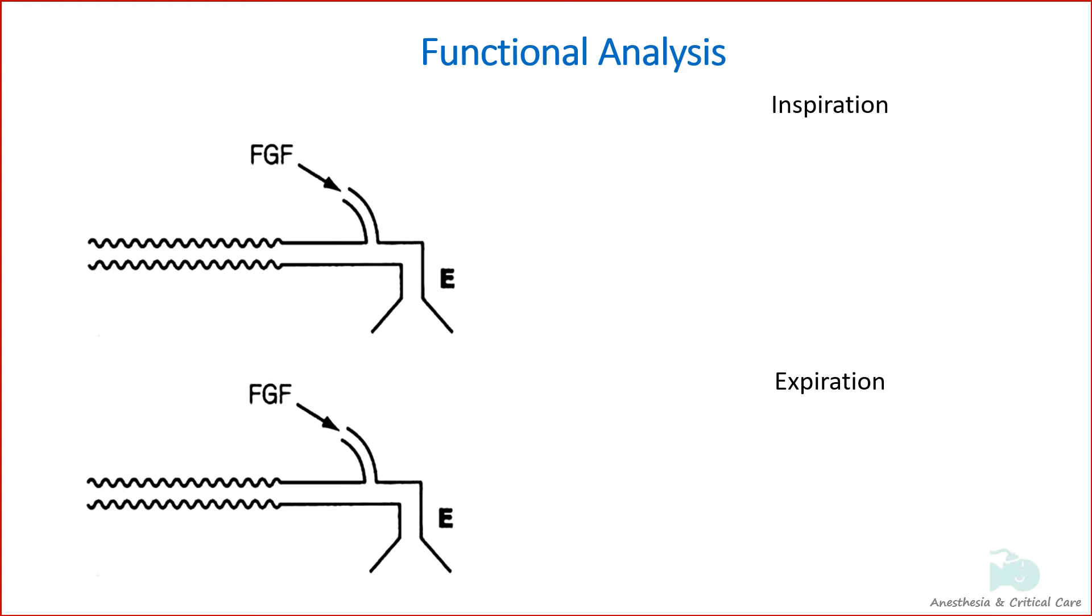Since the peak inspiratory flow rates are higher than fresh gas flow, gases are drawn from the reservoir limb during inspiration. If the reservoir limb capacity is less than the tidal volume of the patient, then air dilution occurs by dragging in the atmospheric air.